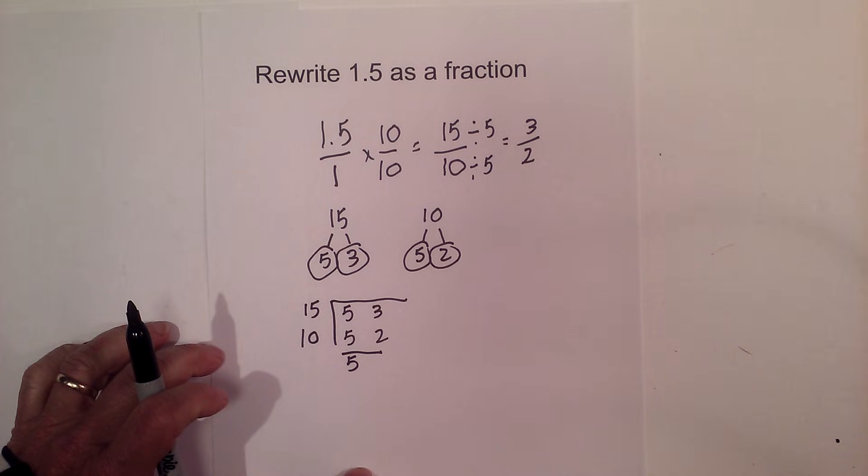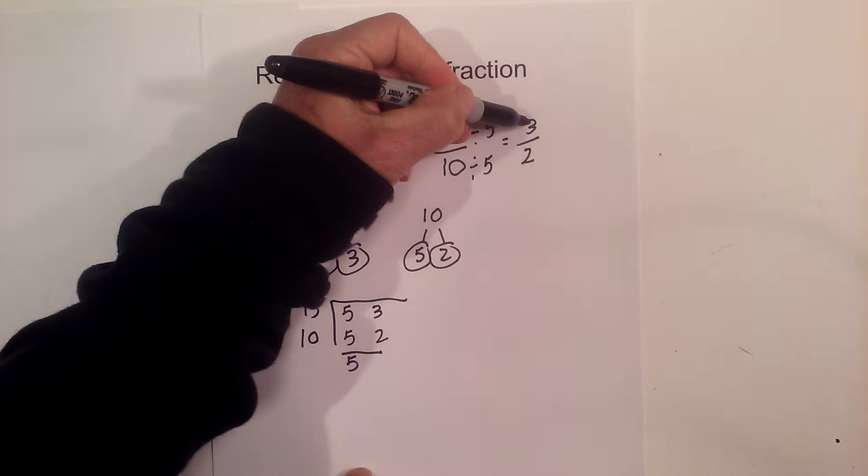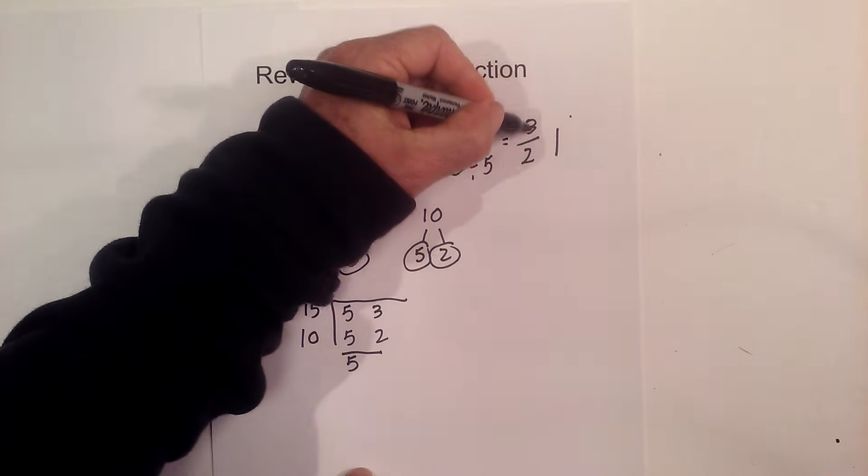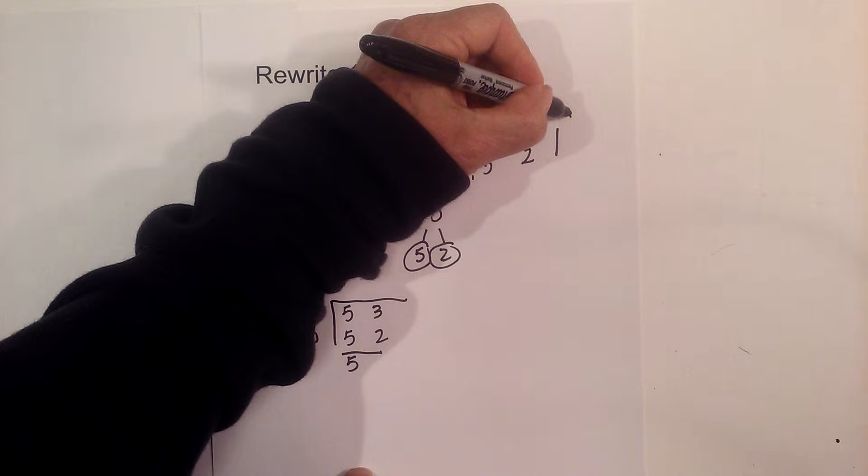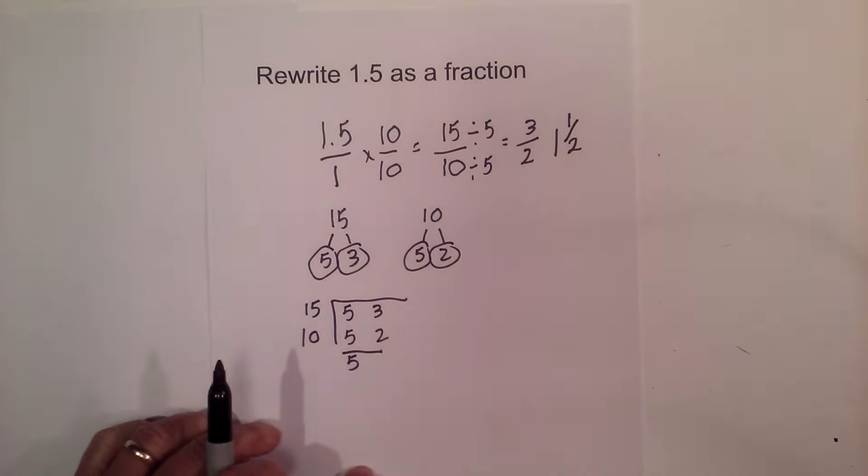And if you would like, you can further convert that to an improper fraction. 2 goes into 3 one time with the remainder of 1, and I'll place that over the 2. So it's one and a half.